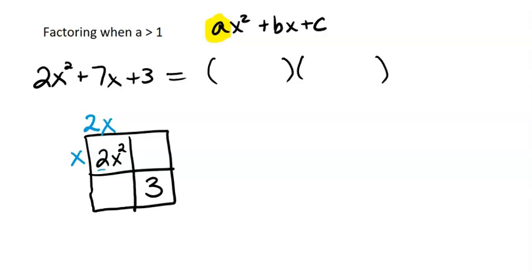Now to get to 3, we know that our factors for 3 are 1 and 3, so I'm going to try to put a 1 here, and a 3 here, and see if that works. I'm going to have both of them be positive for now, because I know my 3 is positive.